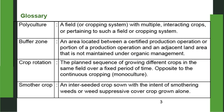See some glossary. Polyculture: a field or cropping system with multiple interacting crops, meaning the field or soil in which you are growing two, three or more different kinds of crops. Buffer zone: an area located between a certified production operation and an adjacent land area that is not maintained under organic management — it is essentially an isolation zone between organic and conventional farm so that mixing cannot happen.